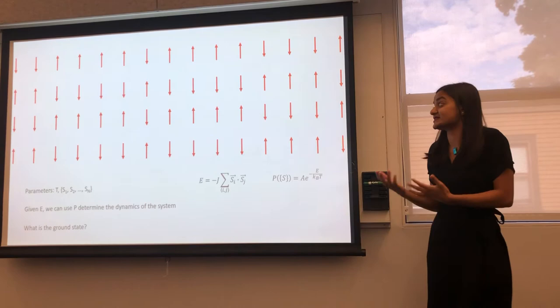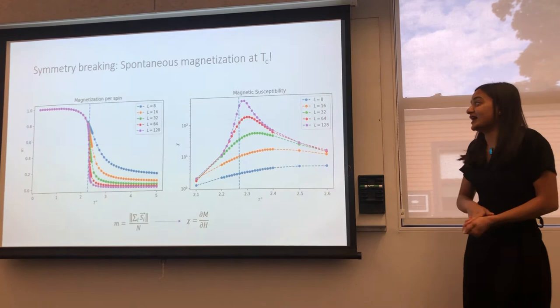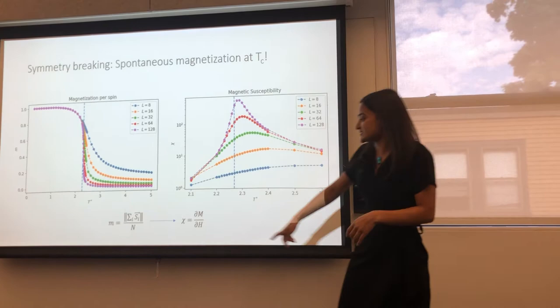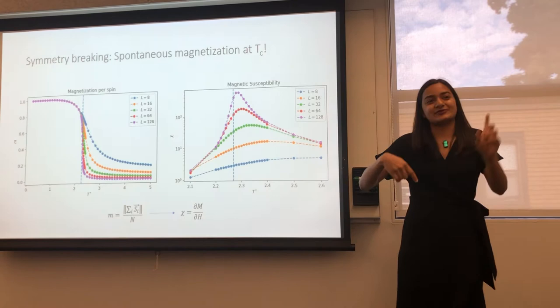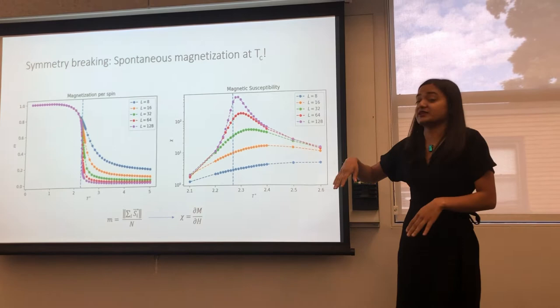But what's interesting about this model is that we see spontaneous symmetry breaking, where we get a symmetry breaking phase transition. So what does that mean? We can define something called the magnetization, which is listed here, which just quantifies how aligned your spins are. So if all of your spins point up or all of your spins point down, this quantity is going to be plus or is going to be equal to one. But if you're half your spins point up and half your spins point down, it'll be equal to zero.